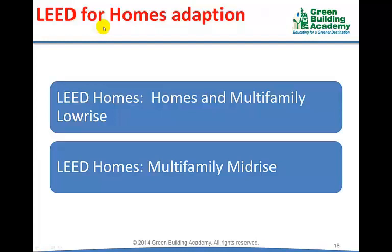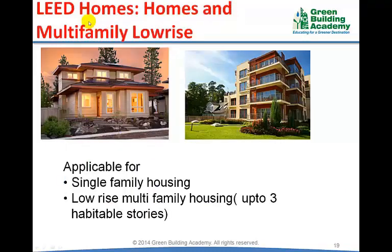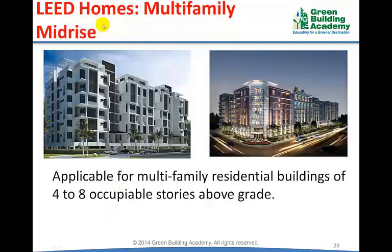LEED for Homes has two adaptations. The low-rise rating system is applicable for single-family housing (stand-alone villas) and low-rise multifamily housing (residential apartments up to three habitable storeys). LEED for Homes Multifamily Mid-Rise is applicable for mid-rise residential apartments with four to eight habitable storeys.